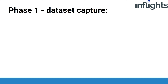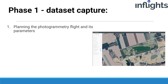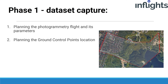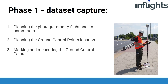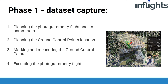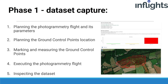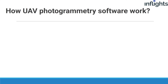In this tutorial series we will focus on the first phase, which can be divided into many sub-steps: planning the photogrammetry flight and its parameters, planning the ground control points location, marking and measuring the ground control points, executing the photogrammetry flight, and inspecting the dataset quality.